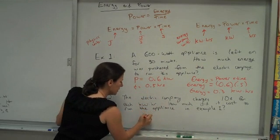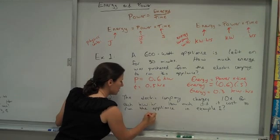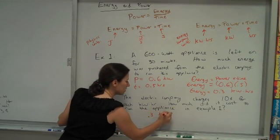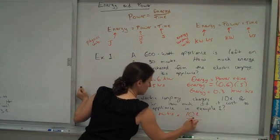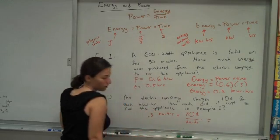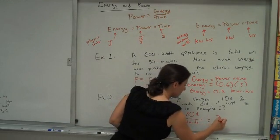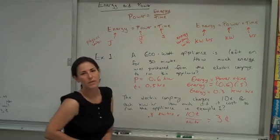And so let's just figure out if I'm requiring, if I need to buy 0.3 kilowatt hours, and it costs 10 cents for each kilowatt hour, then it looks like I'm really only paying three pennies, three cents, to run this appliance.